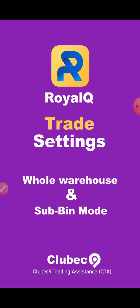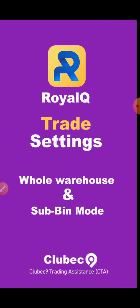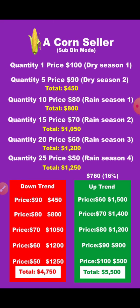The topic is RealQueue trade settings — warehouse mode and sub-B mode. Let's go right inside. We're going to use an analogy of a corn seller. This corn seller bought the first quantity for about $100 at dry season. When it's dry season, corn is always scarce, so the price is on the high side, and the seller was able to buy one quantity at $100.